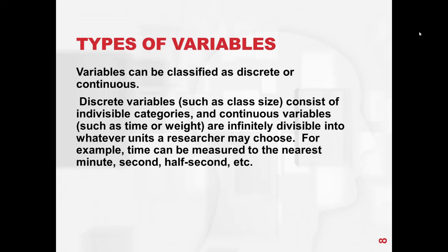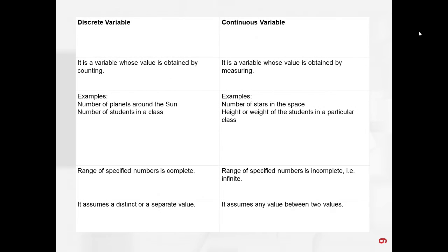For example, time can be measured to the nearest minute, second, half-second, etc. A discrete variable is a variable whose value is obtained by counting. For example, the number of planets around the sun, or the number of students in a class. Its range of specified numbers is complete, and it assumes a distinct or separate value.